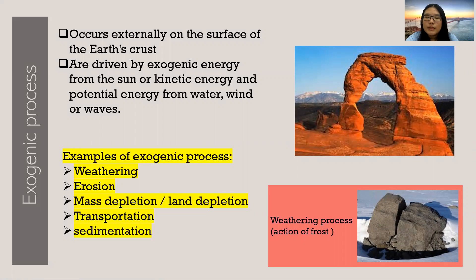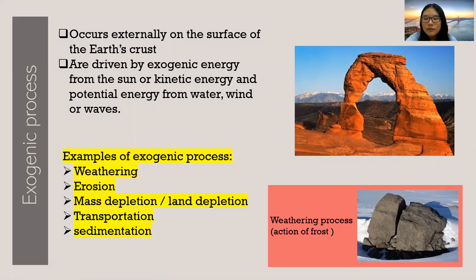Weathering, erosion, mass depletion or land depletion, transportation and sedimentation are examples of exogenic process. Weathering is a slow breakdown of rocks into smaller grains of soil by heat of the sun, frost, plant roots or microorganisms.